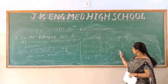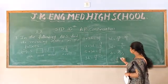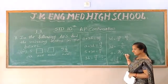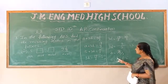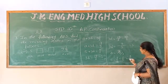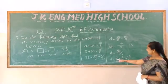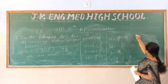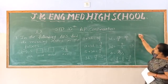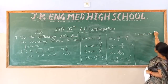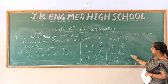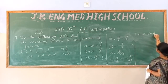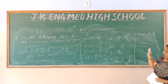To divide the fraction, keep the numerator and change the division sign to multiplication, writing 3 as 3 by 1. So d equals 9 by 2 multiplied by 1 by 3 equals 9 by 6. Cancelling, 3 threes are 9 and 3 twos are 6, giving d equals 3 by 2.